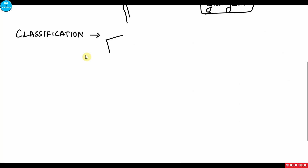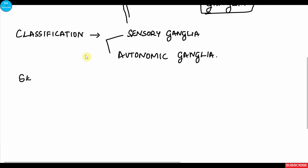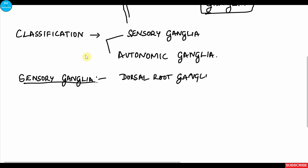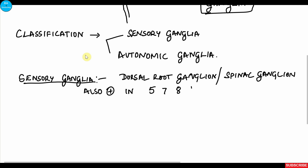The ganglia are classified into sensory ganglia and autonomic ganglia. First we will see the features of the sensory ganglia. Sensory ganglia are sometimes also called the dorsal root ganglion or spinal ganglion, and they are also present in the 5th, 7th, 8th, 9th, and 10th cranial nerves.